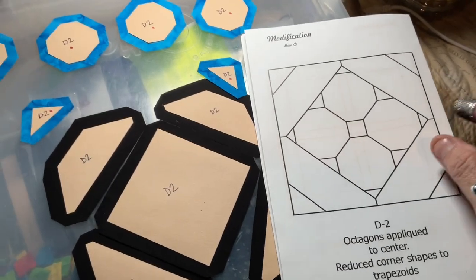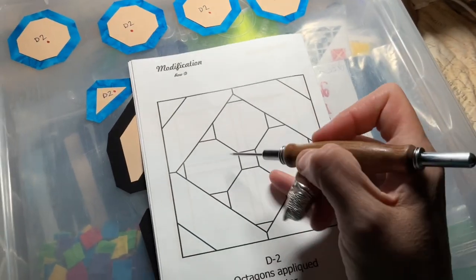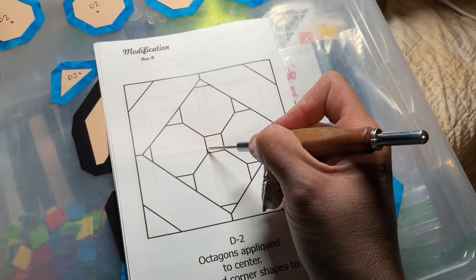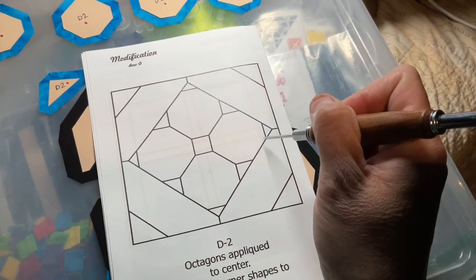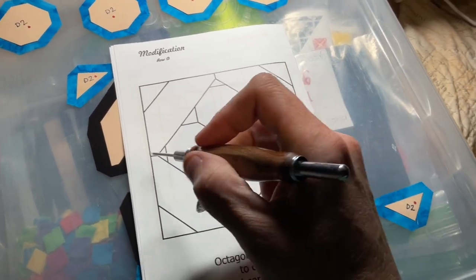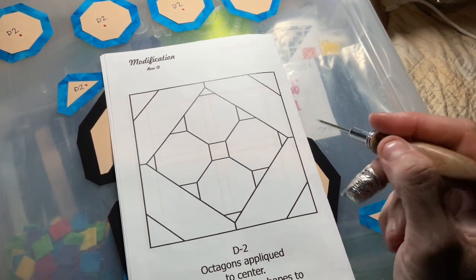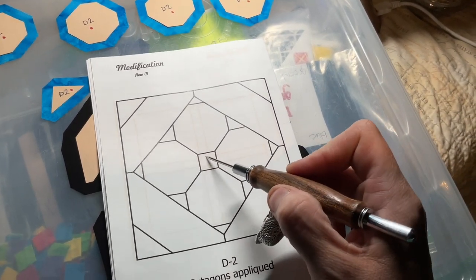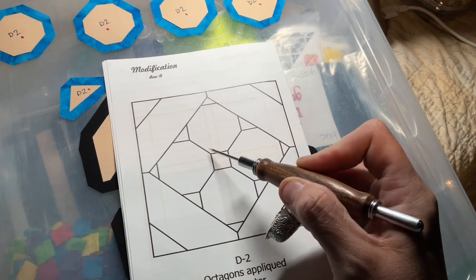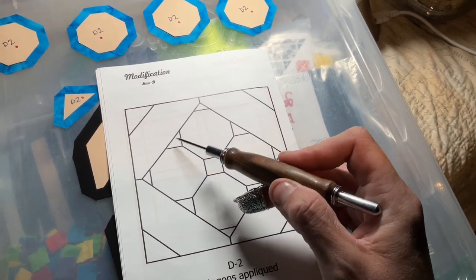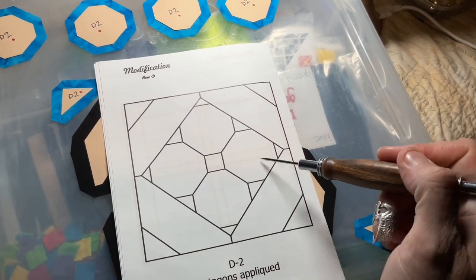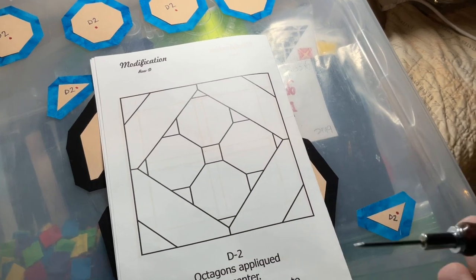And if you've noticed, there are no pieces in here for this square or these tiny triangles. They are not in your kit, and that's because this effect is just where it's not applique. So you're going to get this effect, but it's going to be from the square showing through the octagons.